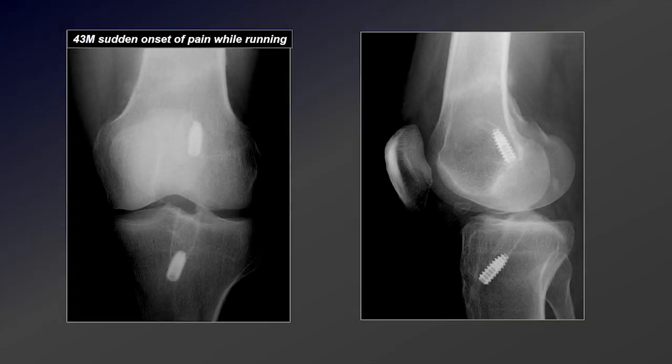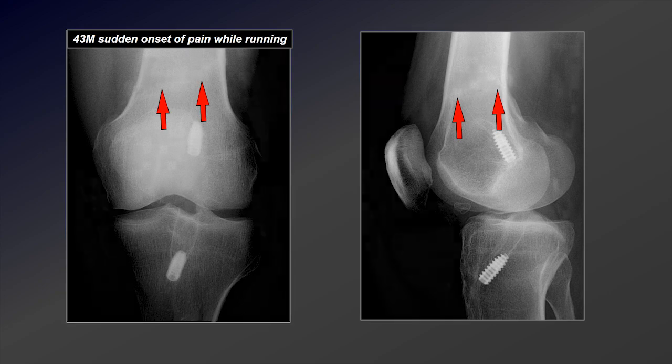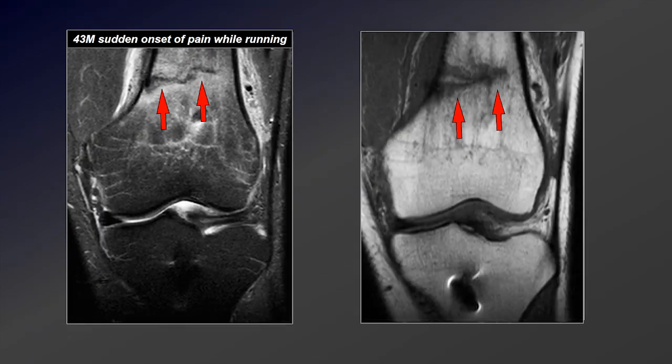Here's another example of a 43-year-old male with sudden onset of pain while running. He's had an ACL reconstruction, and if you look closely in the distal femur, notice that faint sclerotic band going across the distal shaft with some adjacent periosteal reaction — a sign of this stress fracture primarily involving trabecular bone, which is confirmed on the MRI.